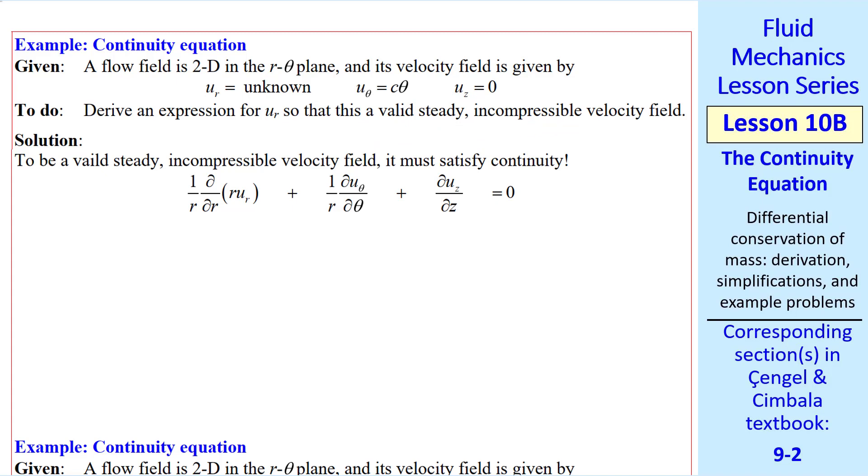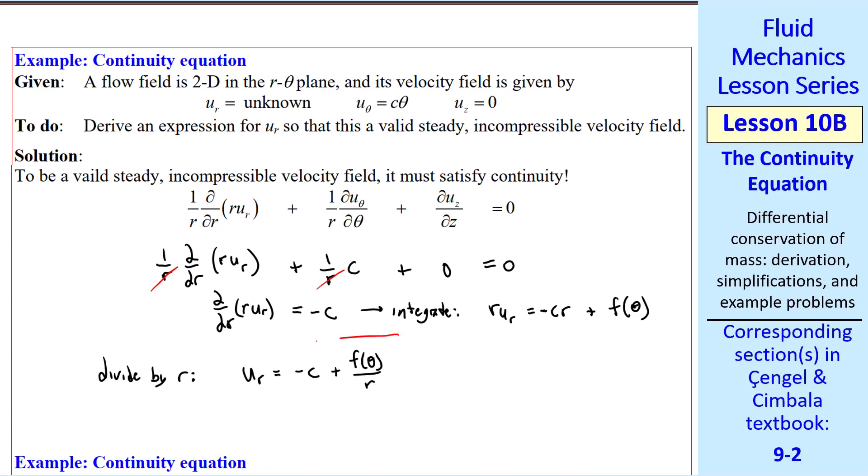And with these extra r's it gets a little trickier. 1 over r, del del r, since we don't know ur, we'll write this term as is, plus 1 over r, del u del theta, which is c, plus 0 equals 0. In this case, the r's in the denominators cancel. So, del del r of r u r equal minus c, which we integrate. The integral of the left side is r u r, and then on the right side, the integral is negative c r, plus a function of the other variable. In general, this would be f of theta and z, but this is a 2d flow, so I'll just write a function of theta. Well, we're not quite done yet. Let's divide both sides of this equation by r. We get ur is negative c, plus some function of theta over r, where f of theta can be any function we desire.